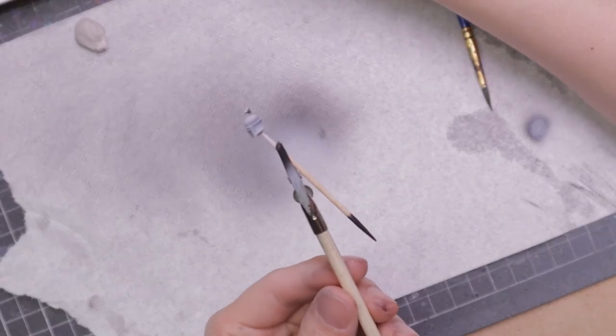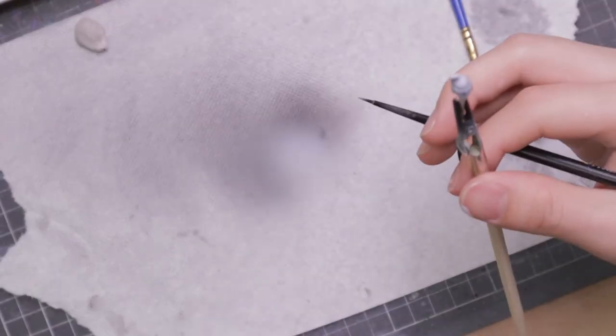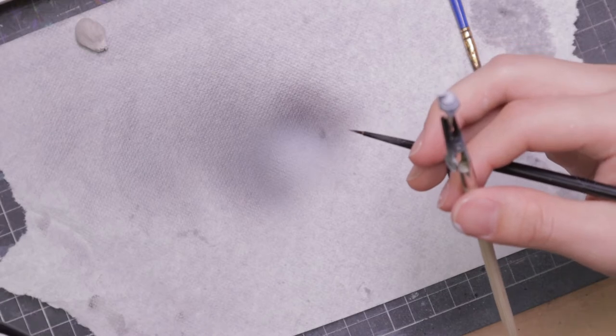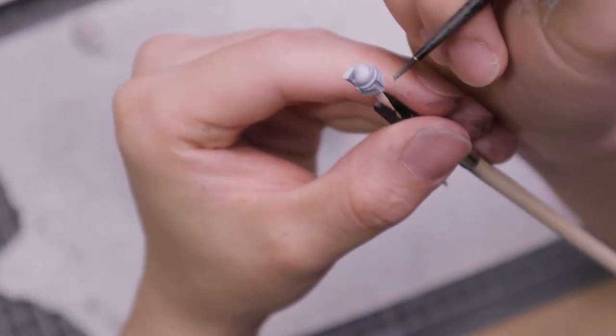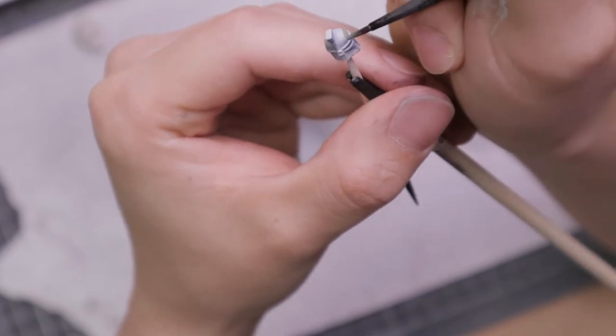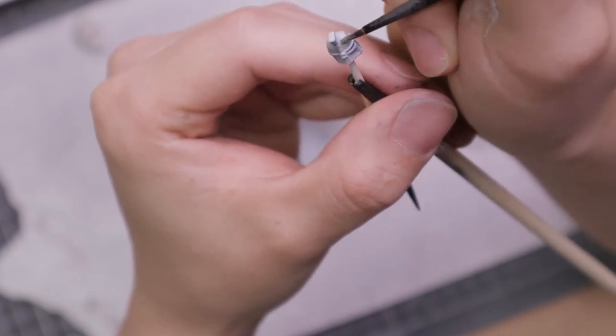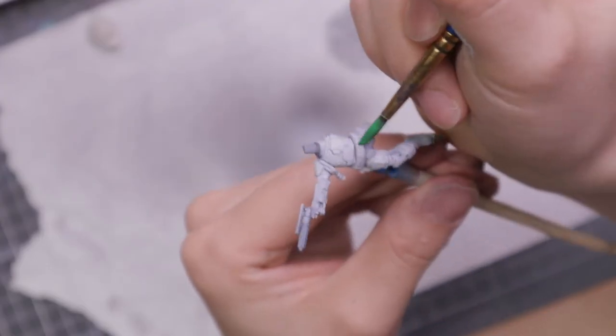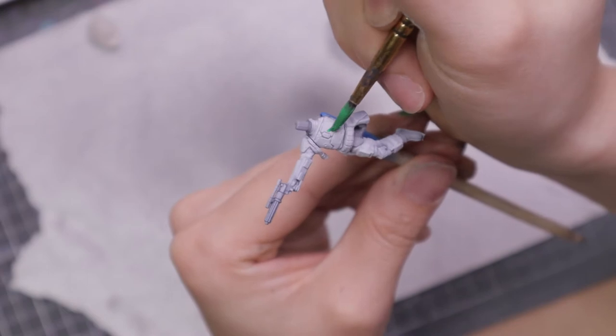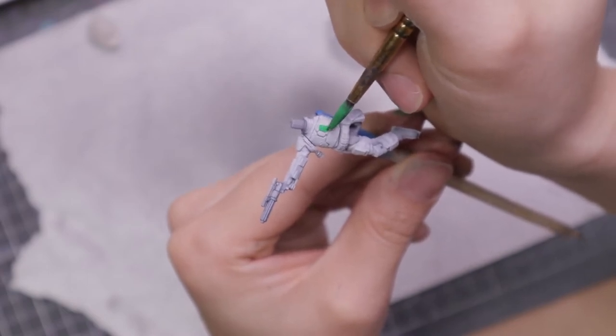Starting with a paler green, I'm going to do the majority of the helmet because the helmet actually has two colors. Now I'm going to use a darker green to do most of the torso and plate.